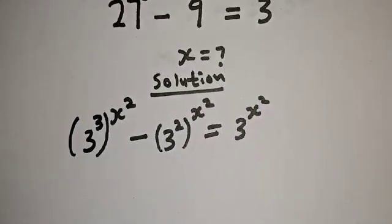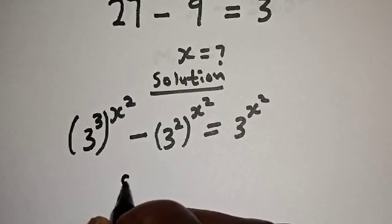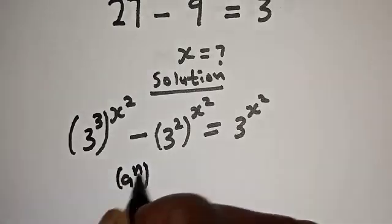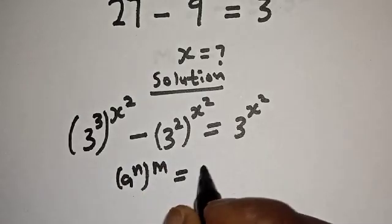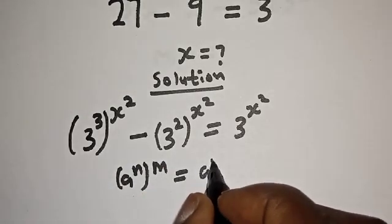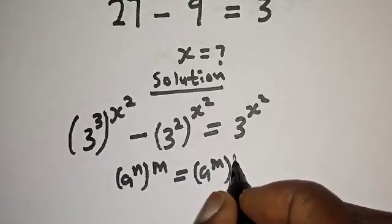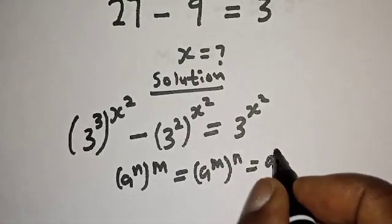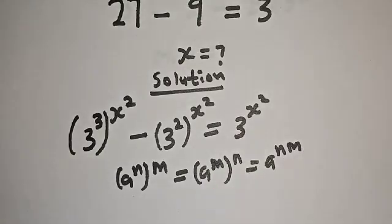Take note of this rule: if you have e raised to power n, to the power of m, this is equal to e raised to power m to the power of n, which equals e raised to power n times m.